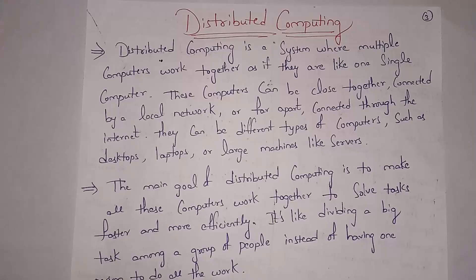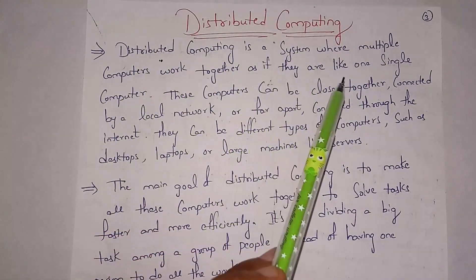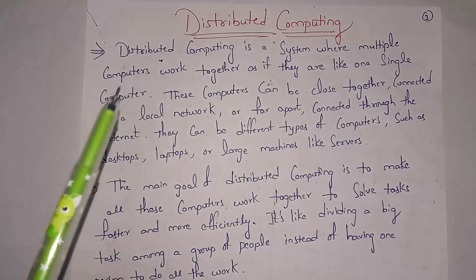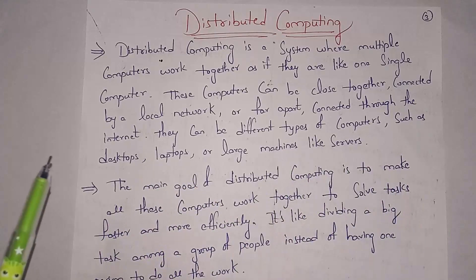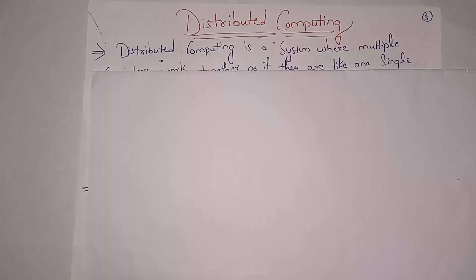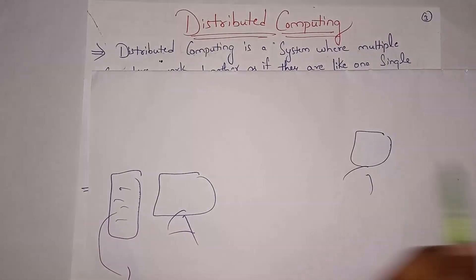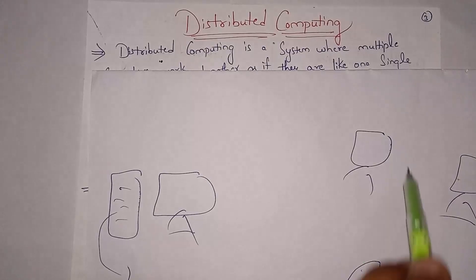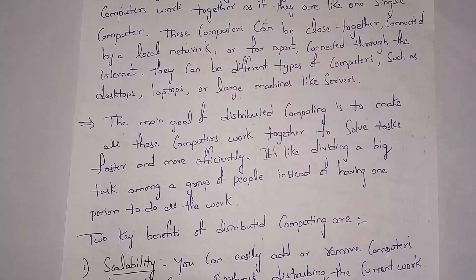Distributed computing is a system where multiple computers work together as if they are one single computer. These computers can be closer together connected by a local network, or far apart connected through the internet. There can also be different types of computers such as desktops, laptops, and larger servers. The main goal of distributed computing is to make all computers work together to solve problems faster and efficiently.